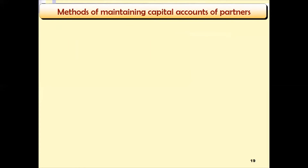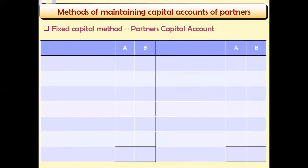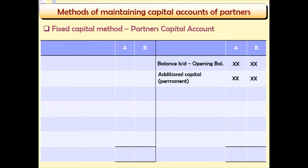If we maintain accounts using the fixed capital method, the Partners Capital Account looks like this. If we have two partners, Partner A and Partner B, then it begins with the opening balances — the balances brought down for each partner — followed by additional capital if there is any. Then the closing balances. In case of permanent withdrawal of capital, that is also recorded there, though it is not a common item.